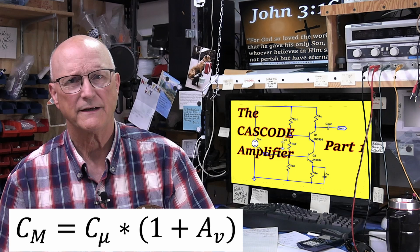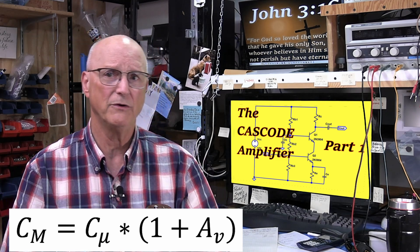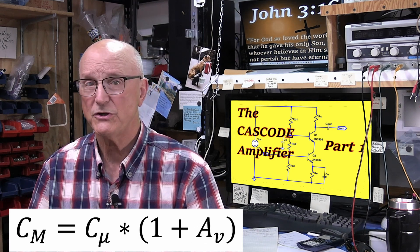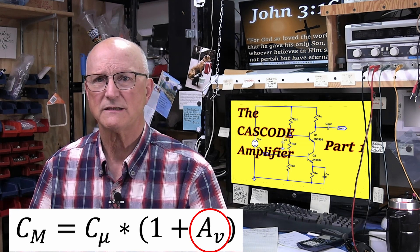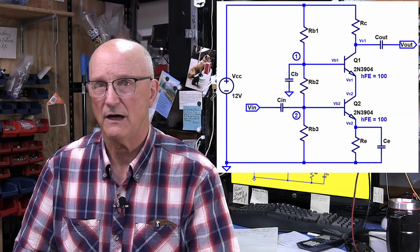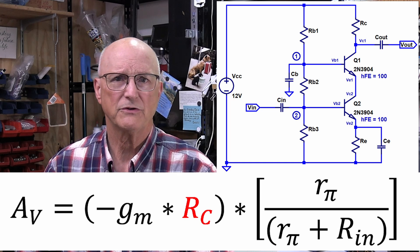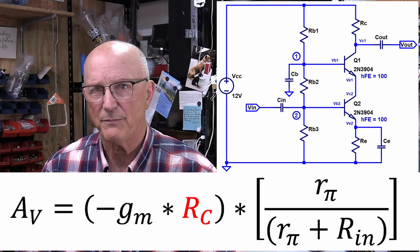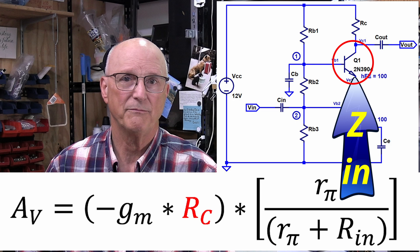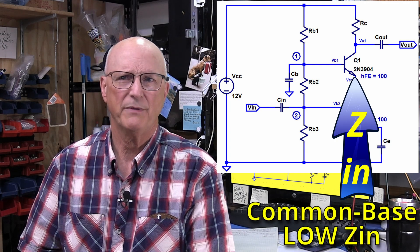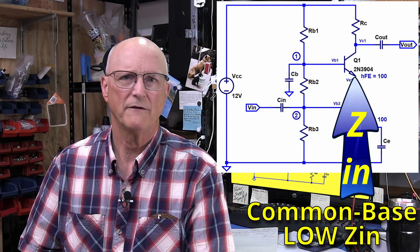So, how does this work? Remembering that the Miller effect is C mu times 1 plus the voltage gain of the amplifier, we want to keep the voltage gain AV as low as possible with the common emitter amplifier. We also have to bring to mind that the gain of the common emitter amplifier is proportional to the value of its collector resistor. The collector resistor for our common emitter amplifier is the input impedance of the common base amplifier. One of the characteristics of a common base amplifier is that its input impedance is very low, often on the order of single digit ohms.